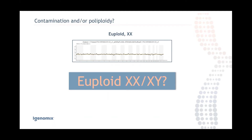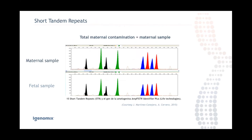When we get a result of euploid normal female or male, we need to determine whether it comes from the fetus or the mother — something conventional karyotype cannot distinguish. We run STR analysis and compare the maternal sample DNA with the fetal sample DNA. If all peaks and alleles are exactly the same, the DNA is coming from the mother, not the fetus — that is maternal cell contamination. In this case, we cannot provide a normal or abnormal result.